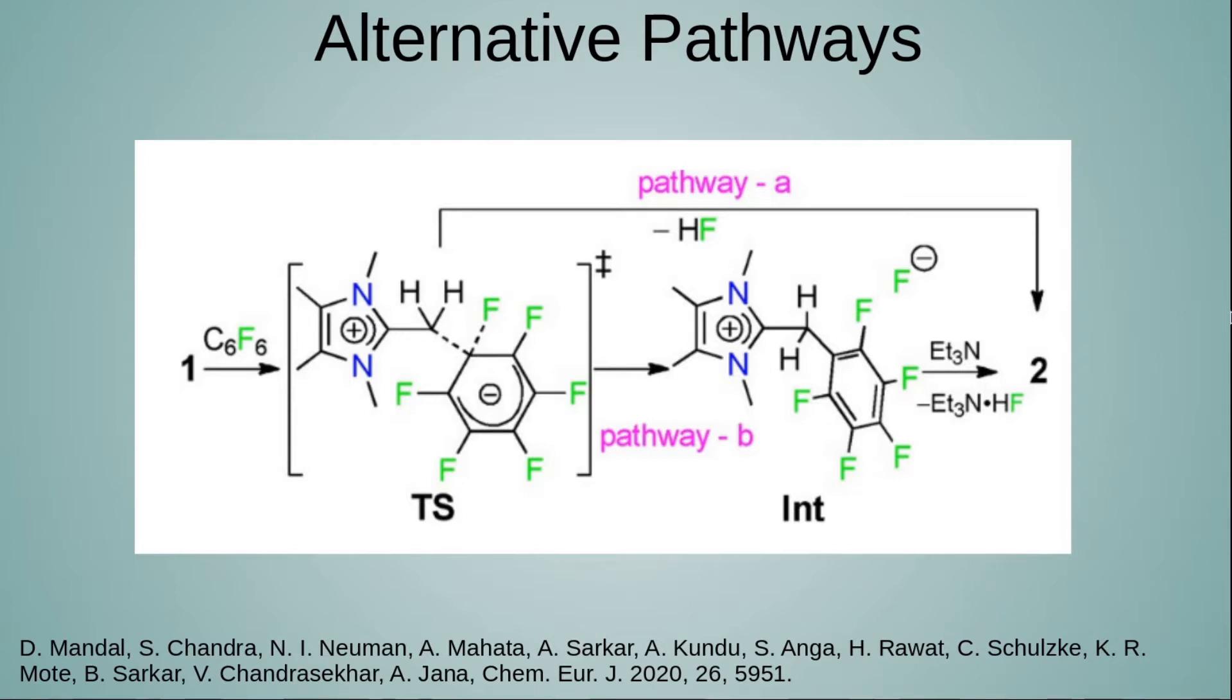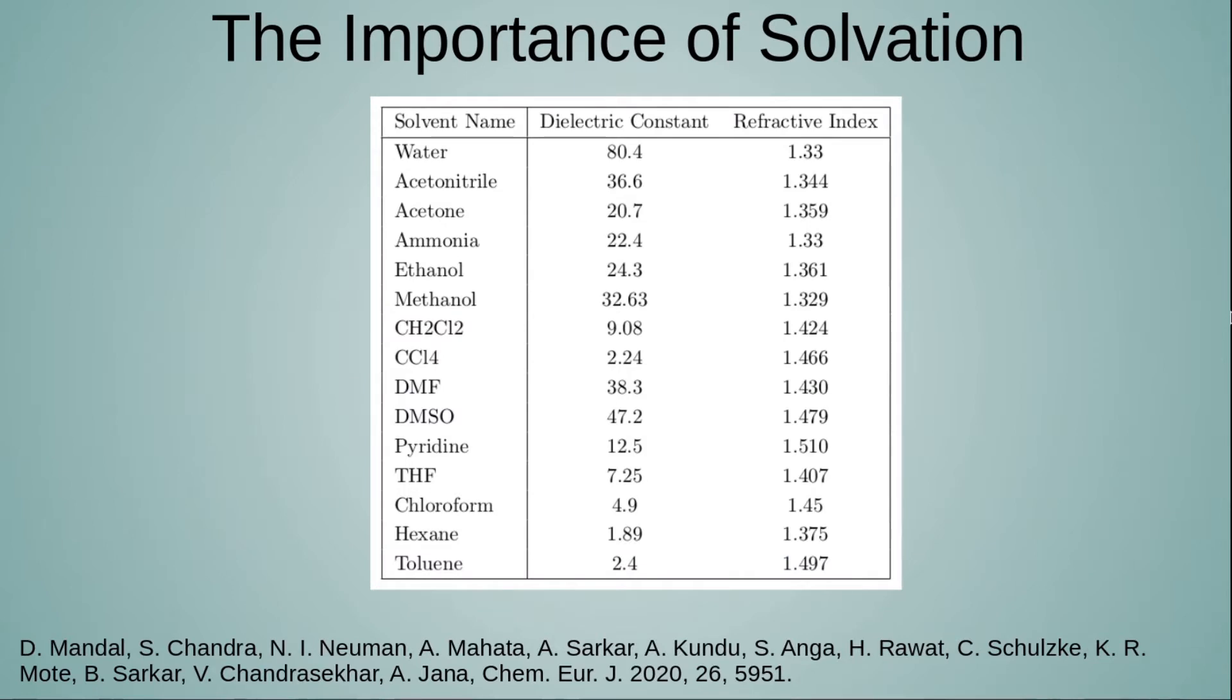When the reaction was performed in hexane under certain conditions, HF was evolved. But in other conditions, a second n-heterocyclic olefin molecule acted as a base, abstracting a proton and generating a salt with fluoride. It was further found that if triethylamine was added to the medium, this acted as a base and produced a salt with triethylammonium and fluoride.